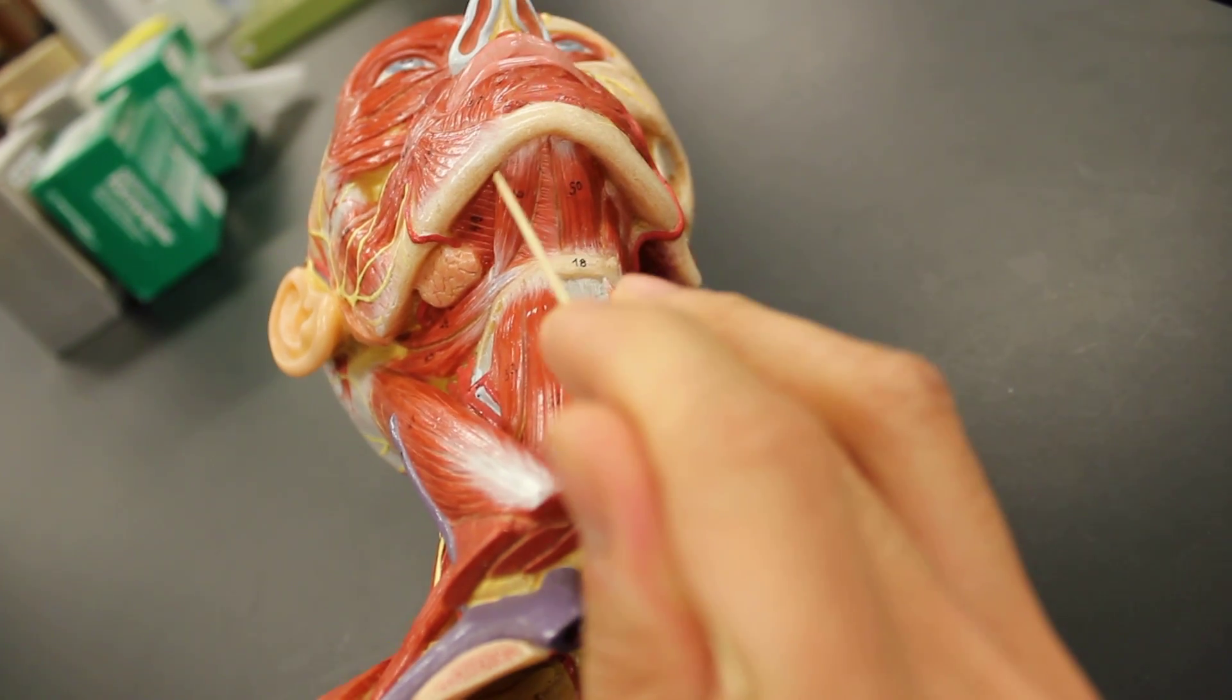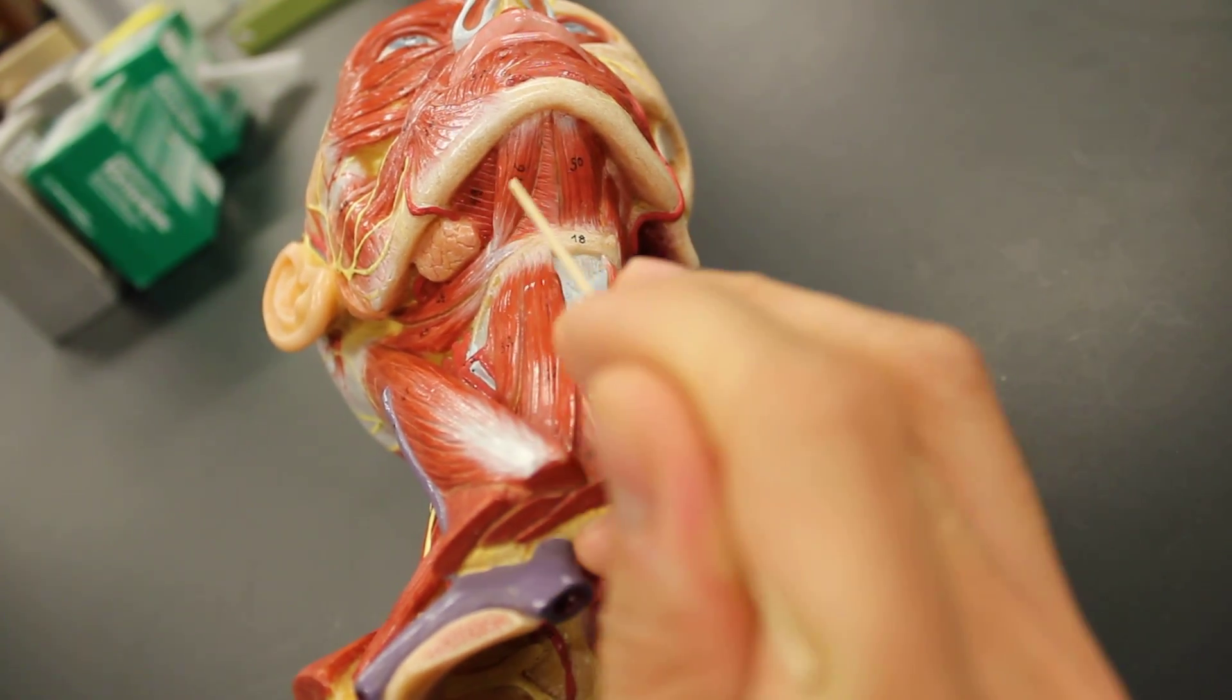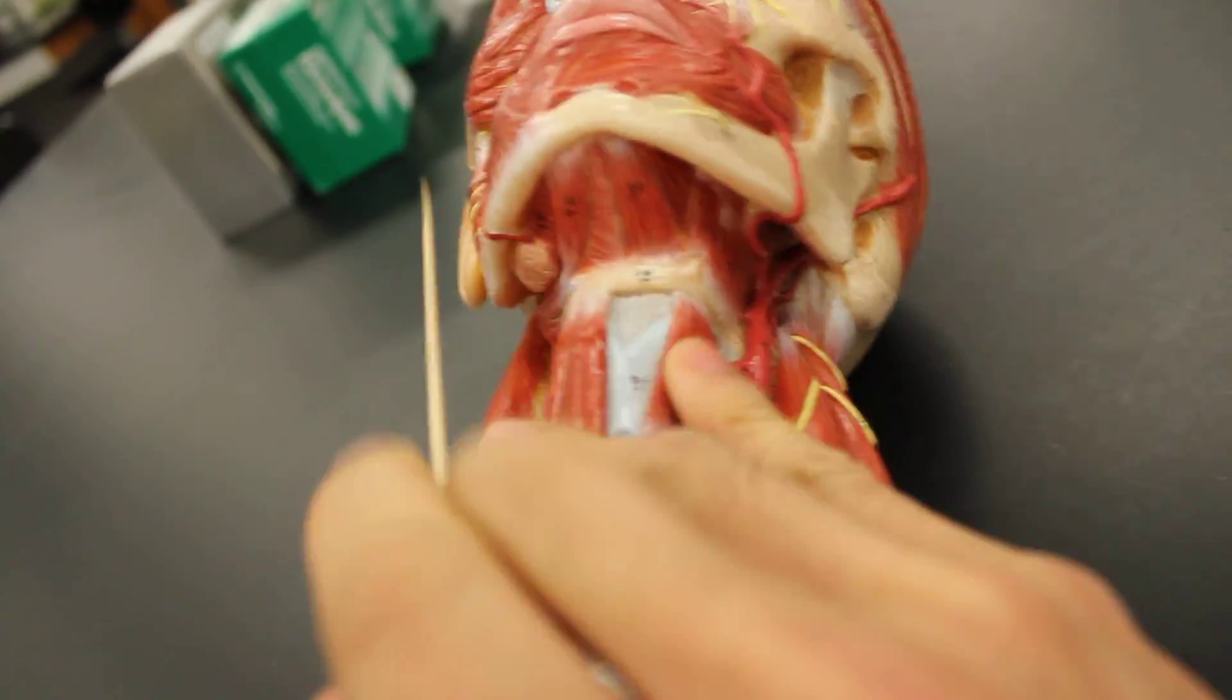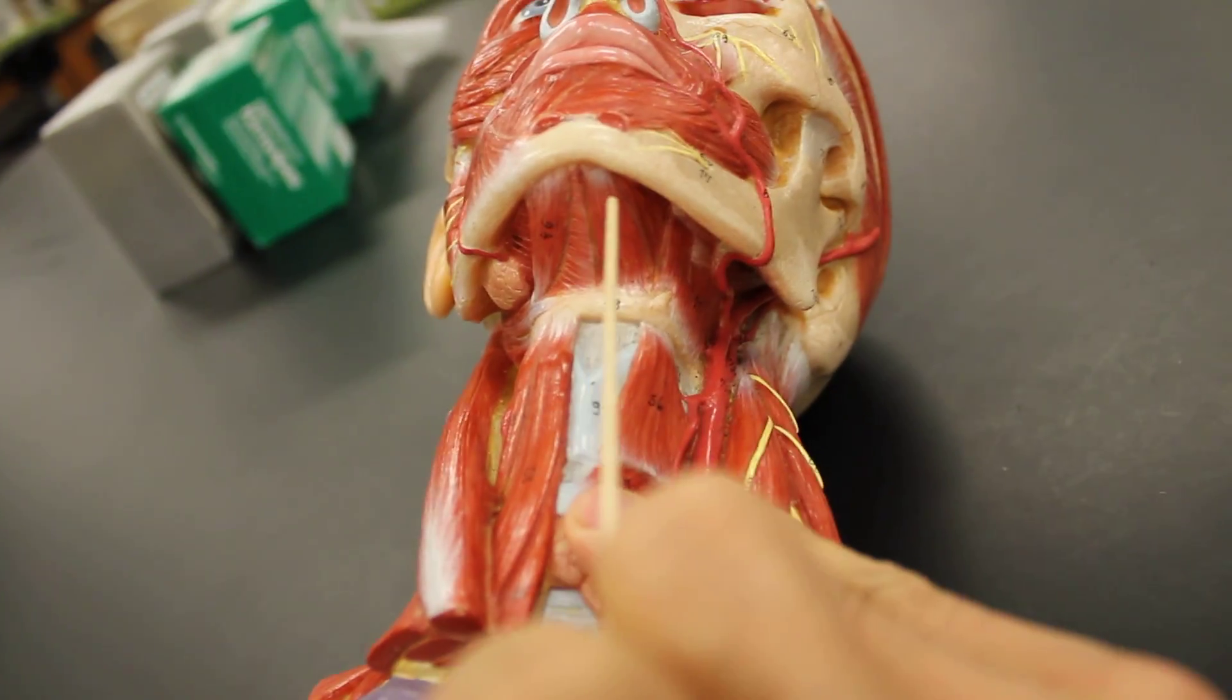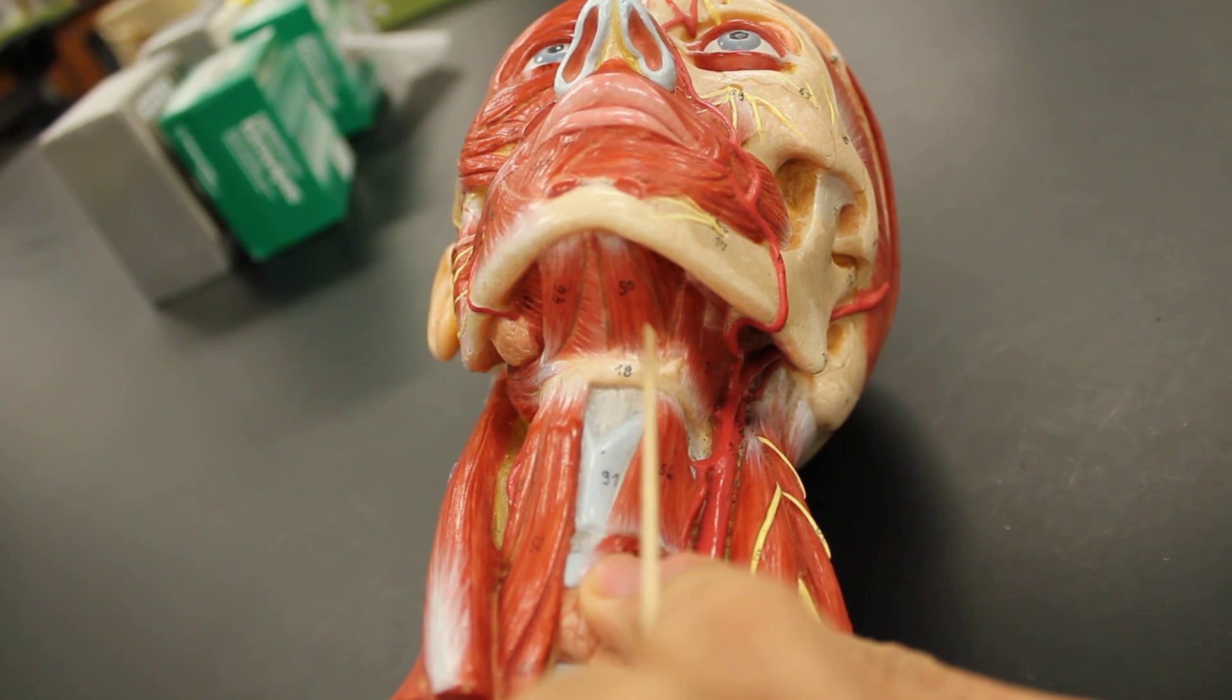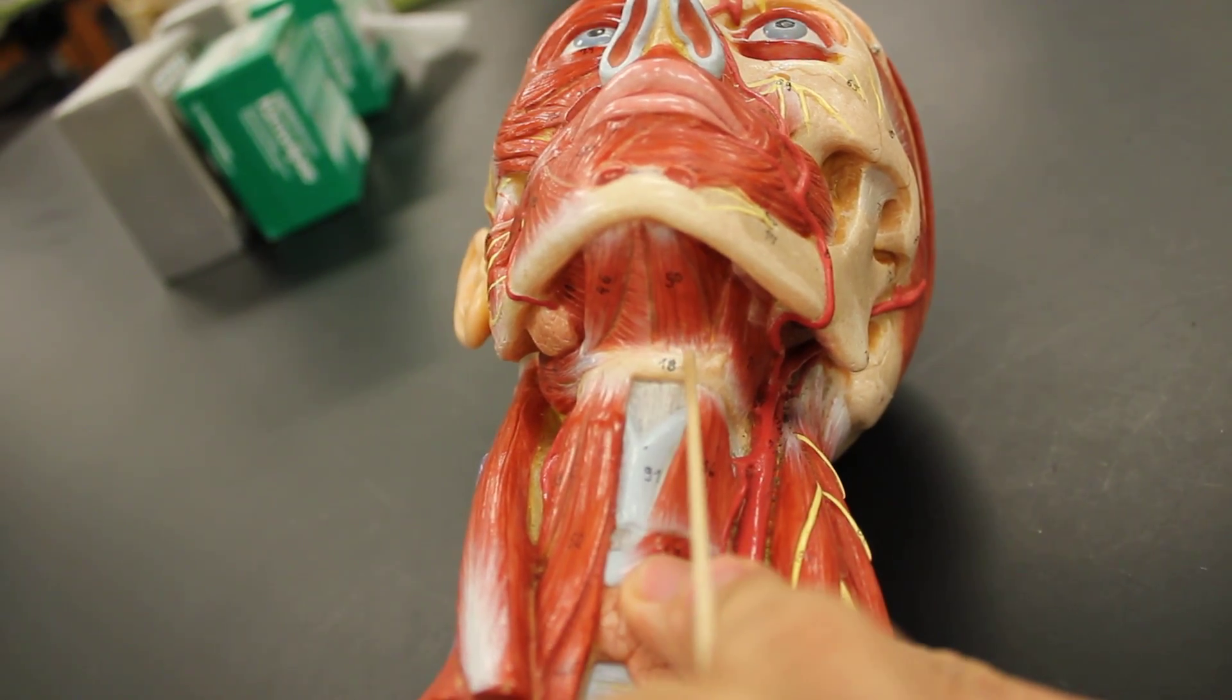If I were to cut the digastric and the mylohyoid and strip that away, I'd find a muscle that looks almost identical to that of the anterior belly of digastric and it's coming anteriorly to the hyoid bone. This would be what we call the geniohyoid. So that's the geniohyoid muscle.